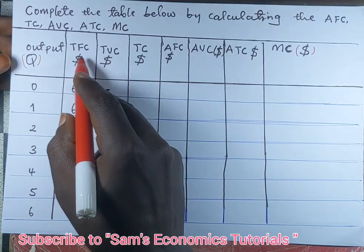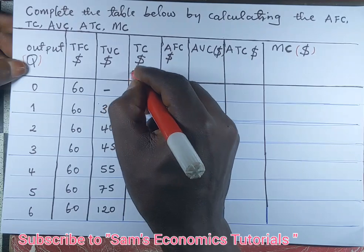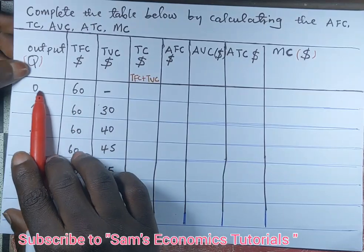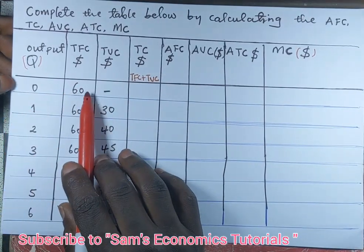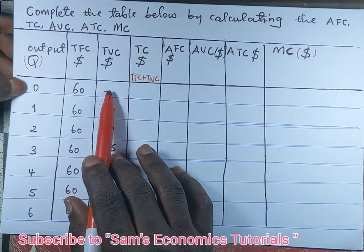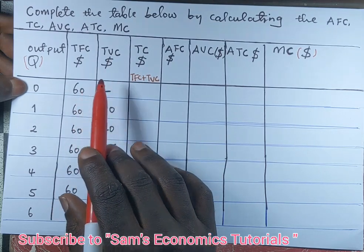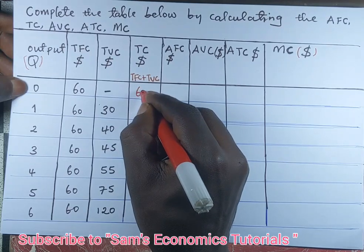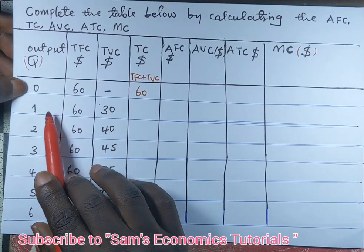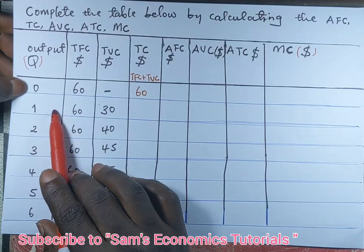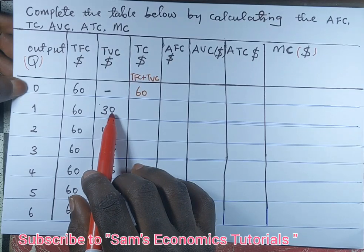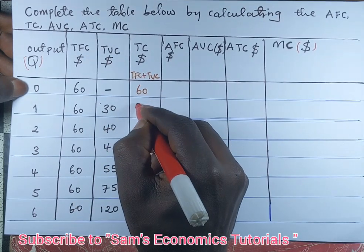Total cost is equal to total fixed cost plus total variable cost. Since output is zero and we do not have the variable cost, we just take the value of total fixed cost which is 60 dollars. When output is one unit, we add total fixed cost of 60 dollars plus total variable cost of 80 dollars, which gives us 90 dollars.